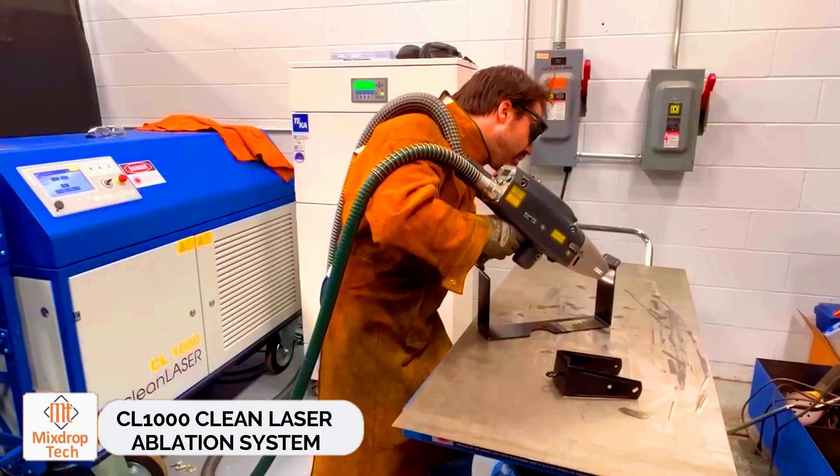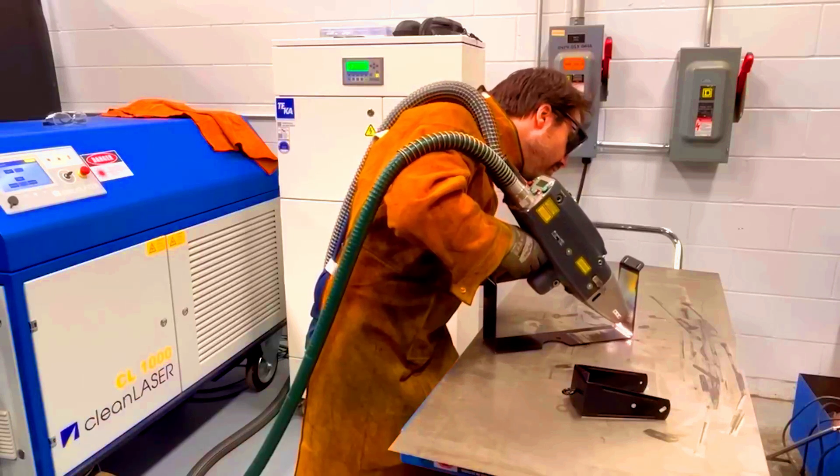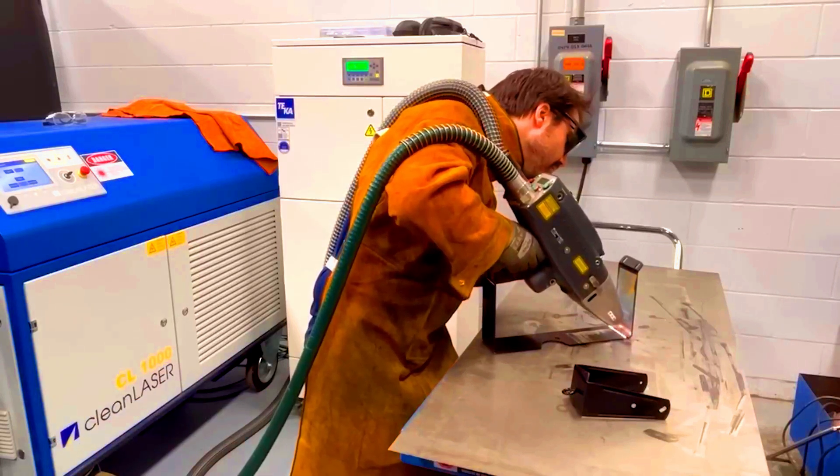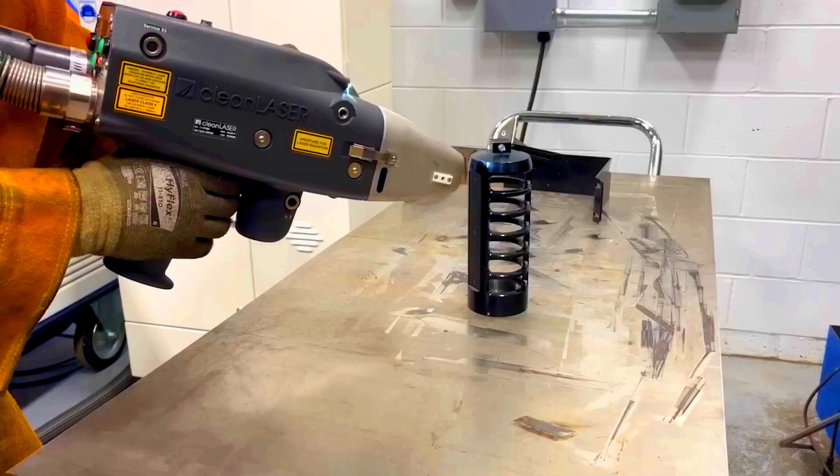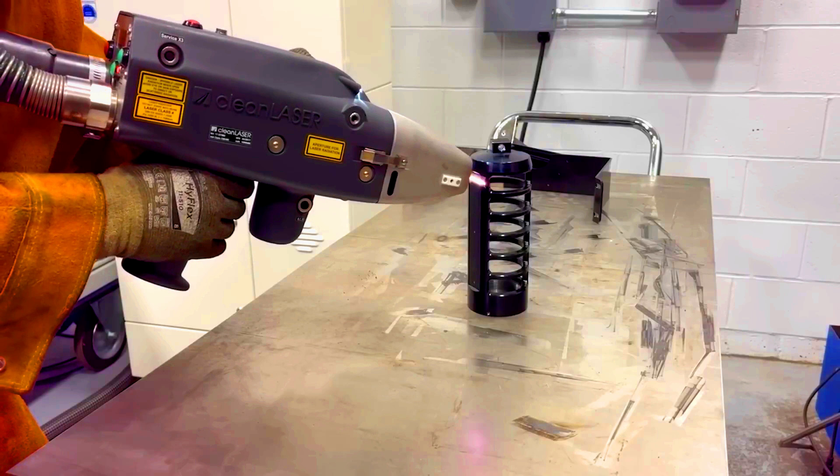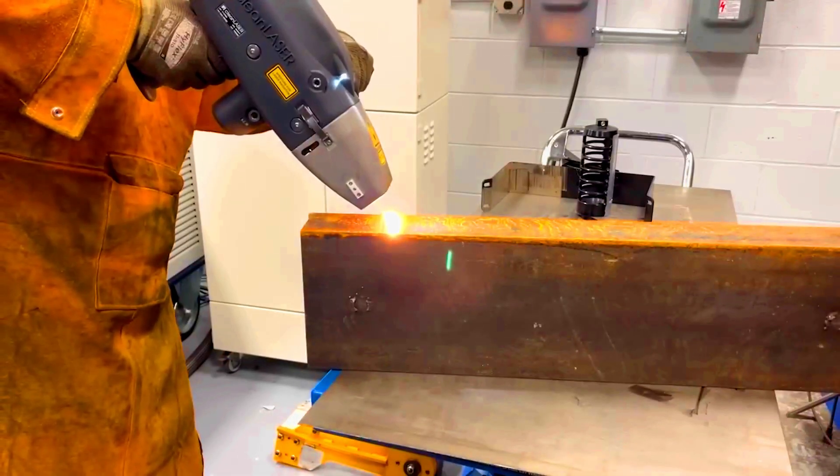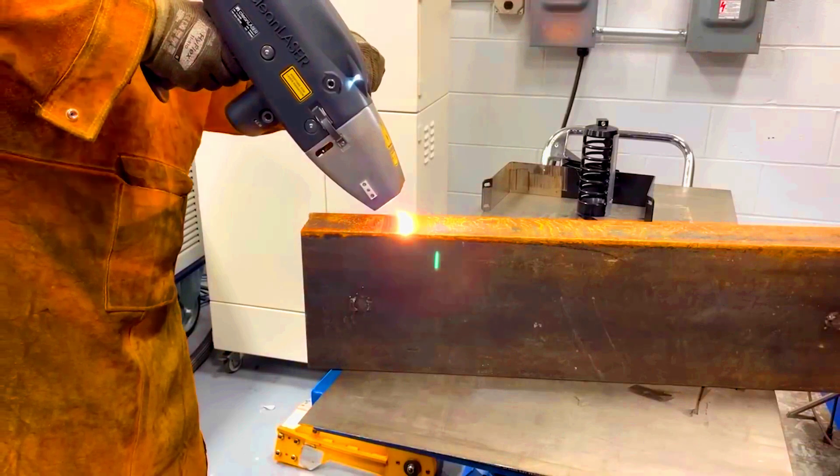CL1000 Clean Laser Ablation System. The CL1000 is one of the most powerful manual laser cleaning systems available. It's even suitable for use in military and nuclear facilities. Equipped with a 1-kilowatt beam source power, the CL1000 allows technicians to remove old or hazardous coatings, rust, and corrosion from metal surfaces.